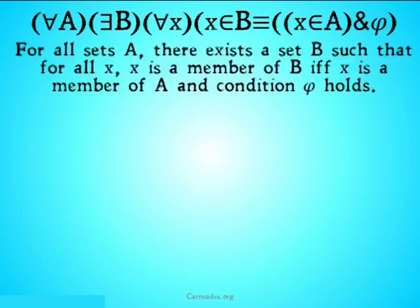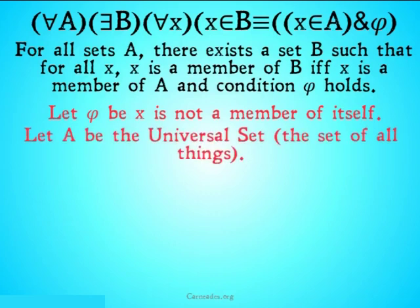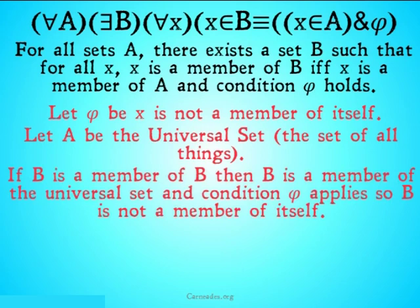Once again, for all sets A, there exists a set B such that for all X, X is a member of B if and only if X is a member of A and condition φ holds. We're going to try the paradox again. Let φ once again be X is not a member of itself, and let A be the universal set, the set of all things, the biggest set we could possibly get to fit B in. If B is a member of B, so B we're going to put in for X in this case, if B is a member of B, then B is a member of the universal set and condition φ applies, so B is not a member of itself.